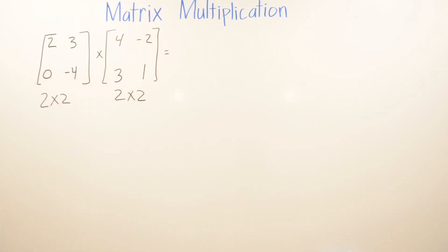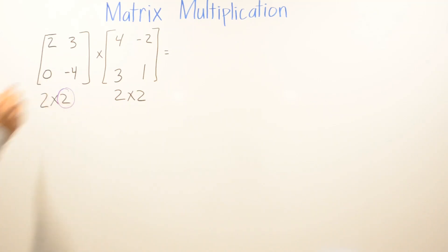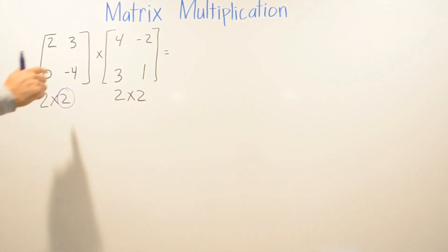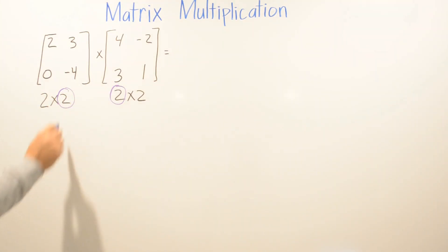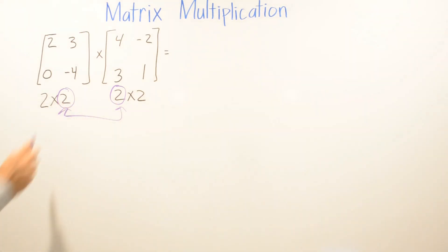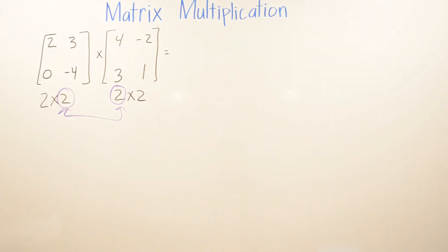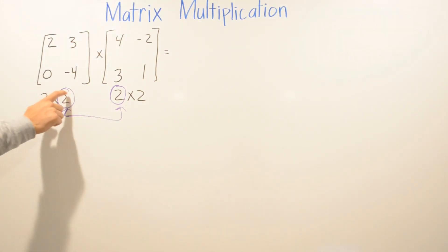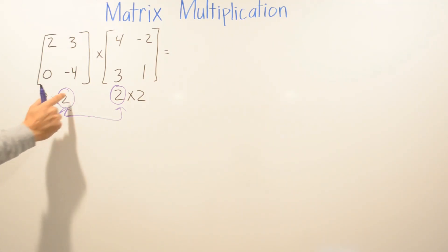The only way you're going to find out if you're able to multiply these matrices is to circle the number of columns for the first matrix and the number of rows in the second matrix. If they're both the same number, you can go ahead and multiply. If you have a 3 and a 2, or a 1 and a 3, you're not going to be able to multiply — it's going to be an undefined matrix.